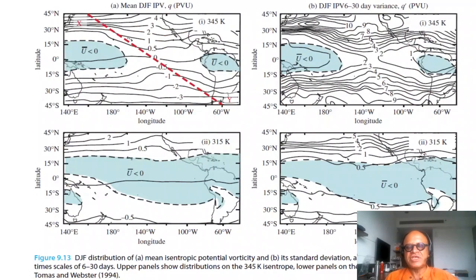Look at the distribution of the mean isentropic potential vorticity and its standard deviation for December, January, February. Looking at the upper level 345 K and lower level 315 K, the lower level basically has easterlies over the low latitudes and has the westerly duct.